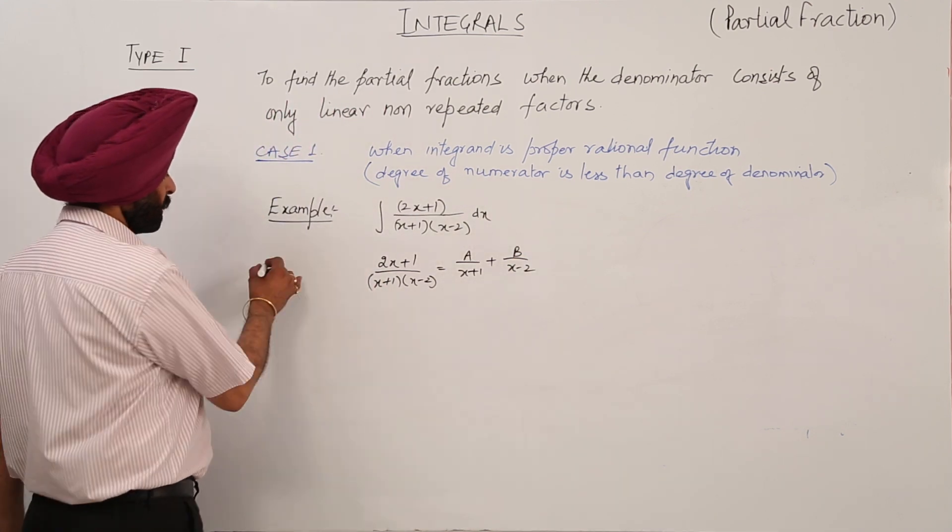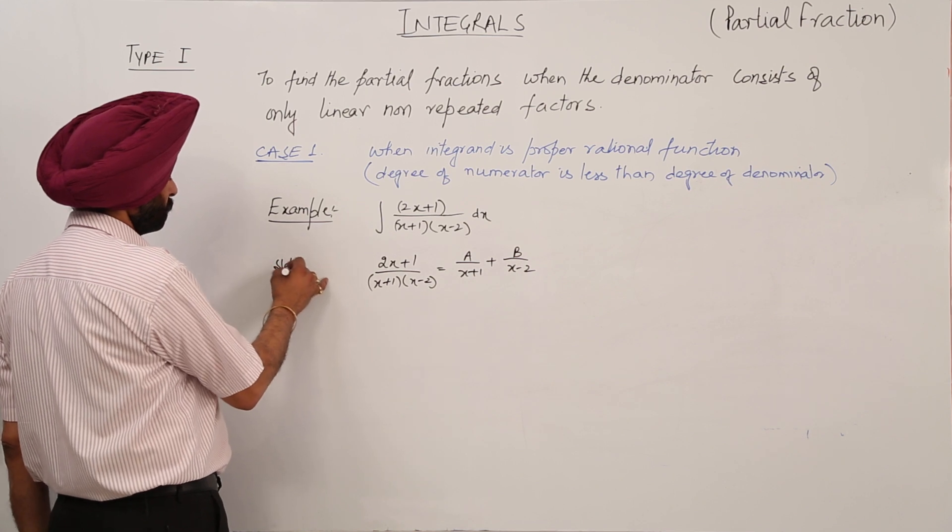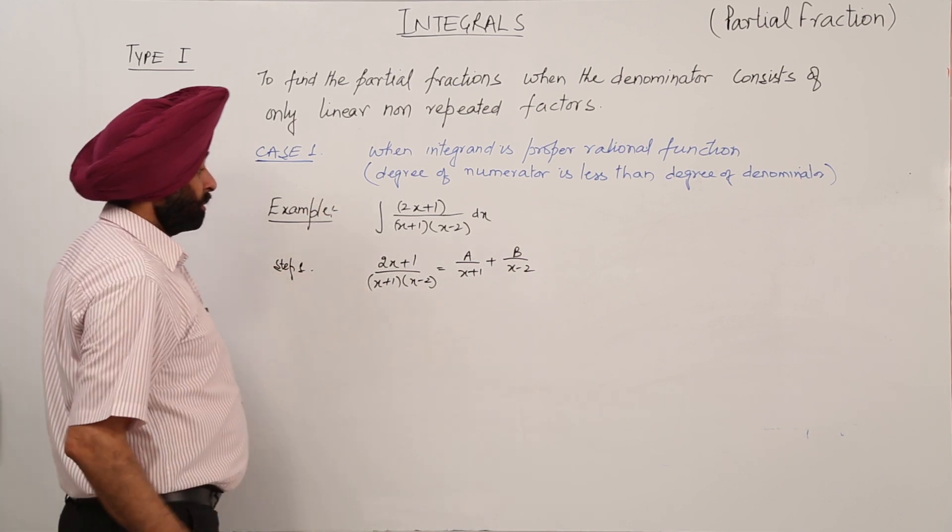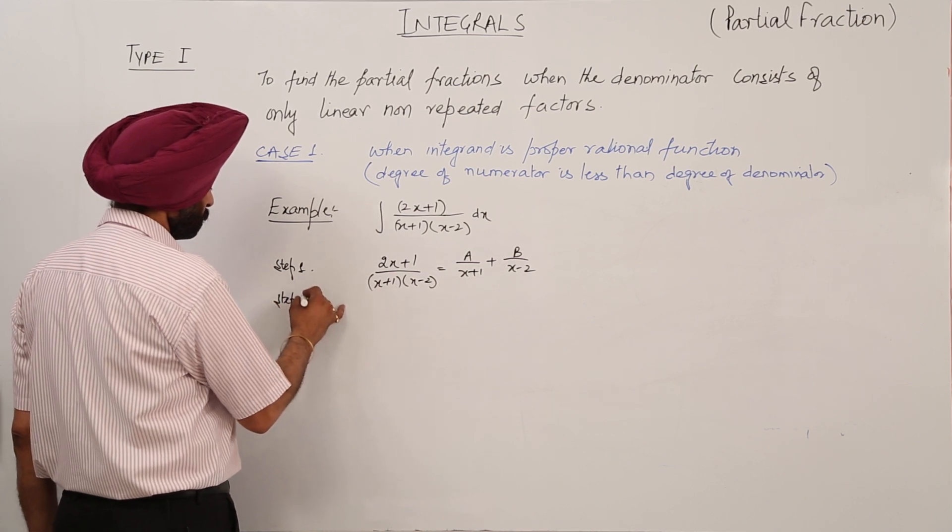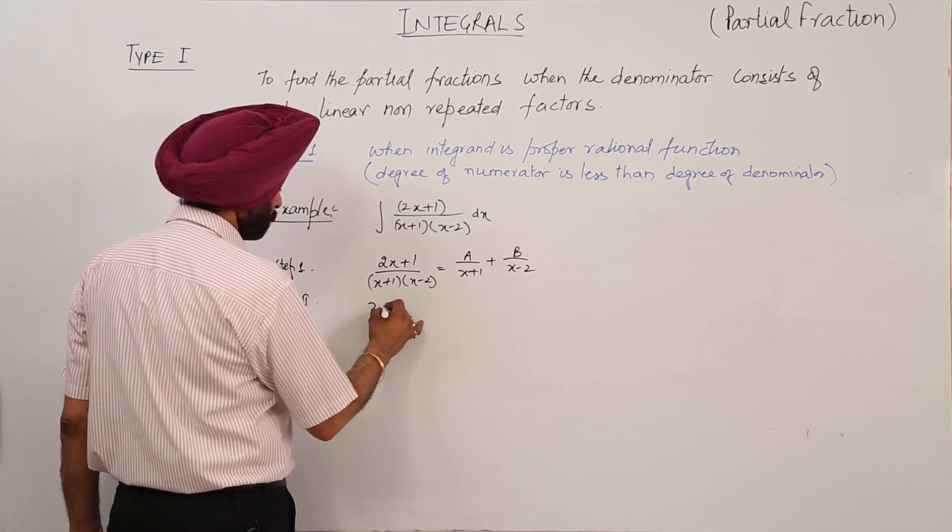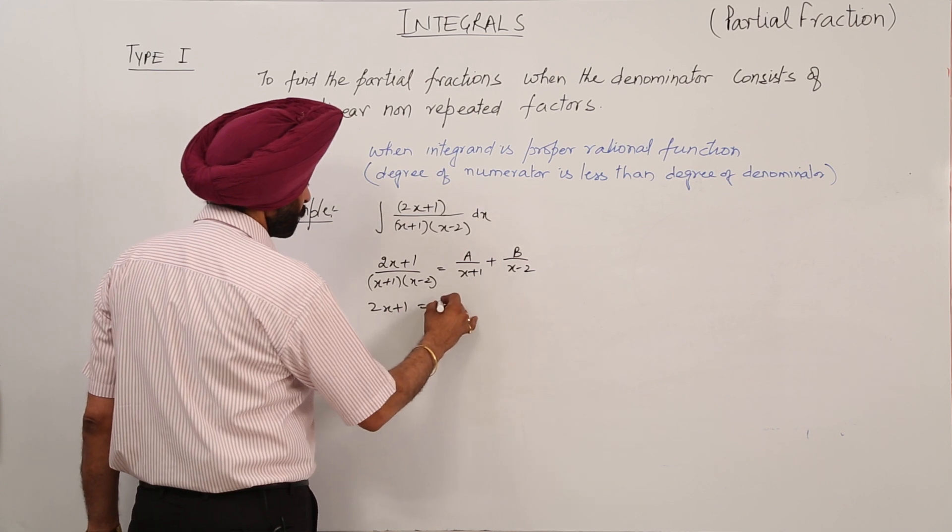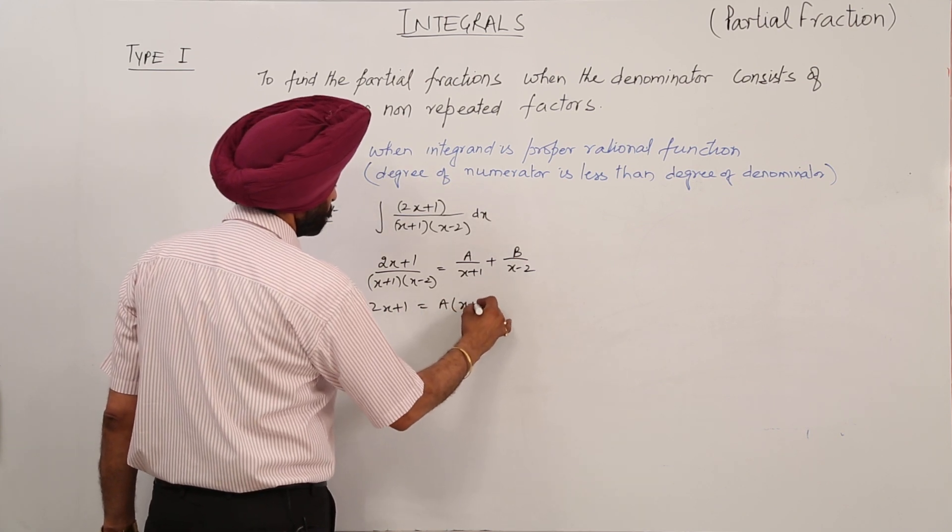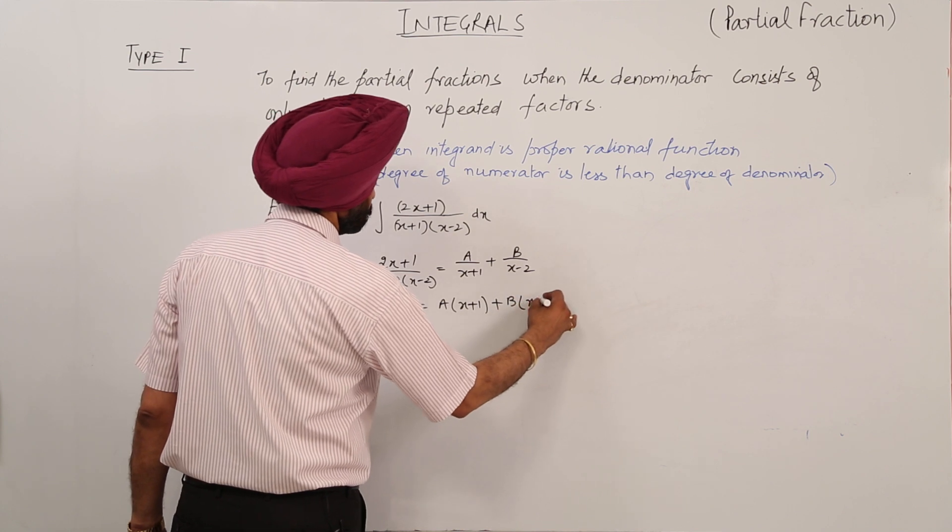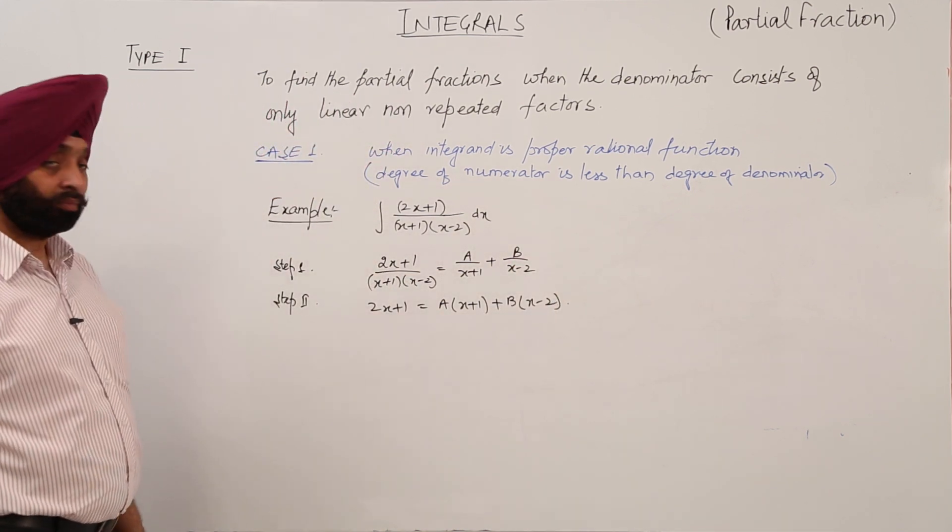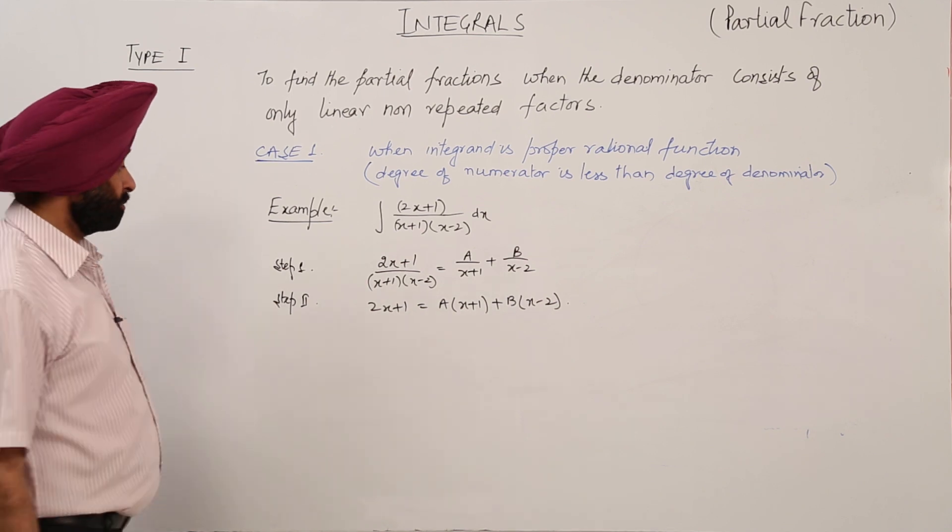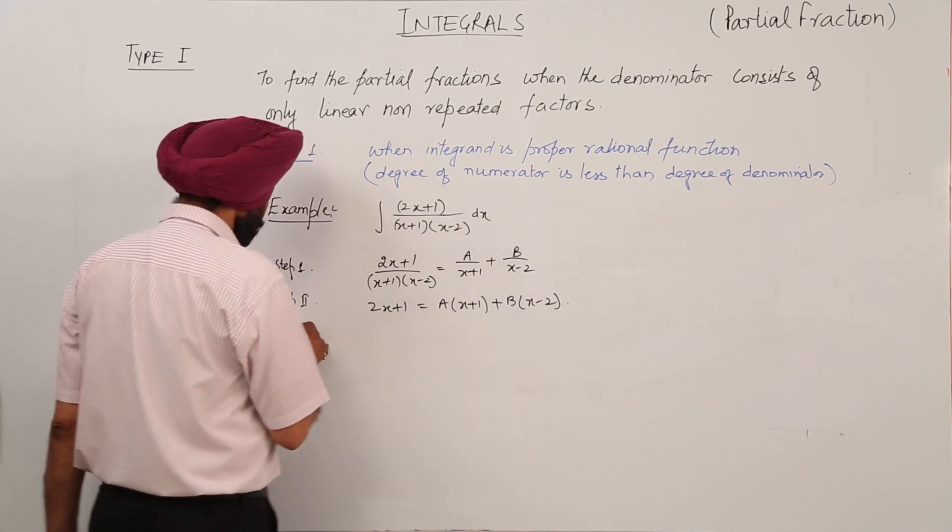First step, that is step 1. Now step 2: 2x plus 1 is equal to A(x minus 2) plus B(x plus 1). After taking the LCM we will be getting this term. Now step 3.